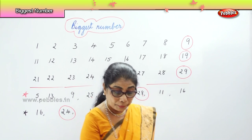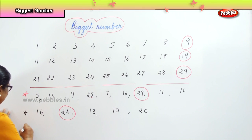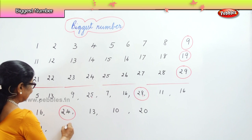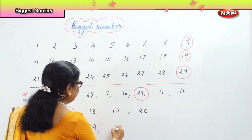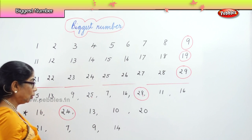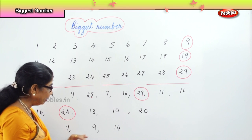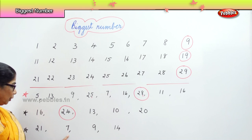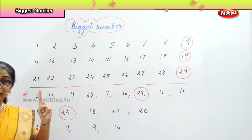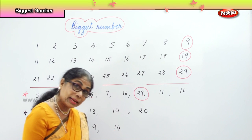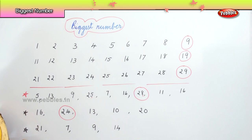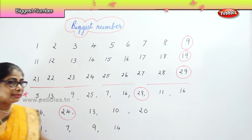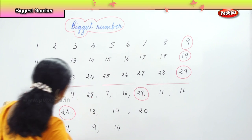I will give you another mix-up of numbers — you tell me which is the biggest. The numbers are: twenty-one, seven, nine, and fourteen. The second and third numbers are single digit. Here you have in the first place one, and the second place four — fourteen. But here you have twenty and one — two and one. Two in the first place — definitely twenty-one is the biggest number.